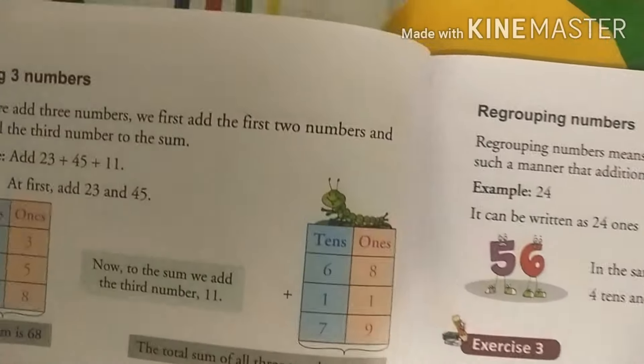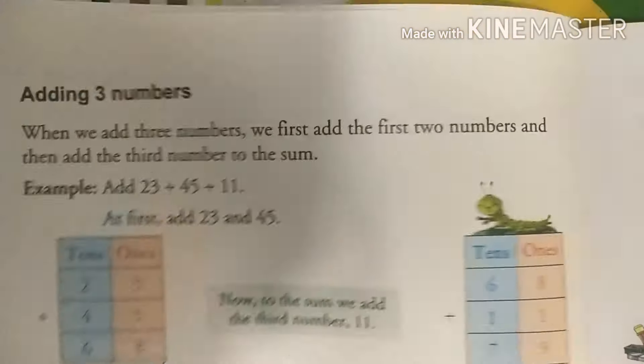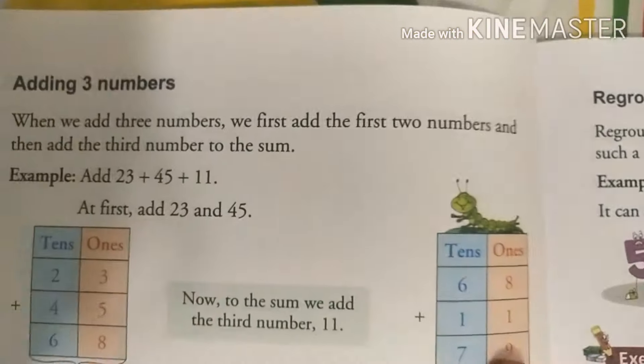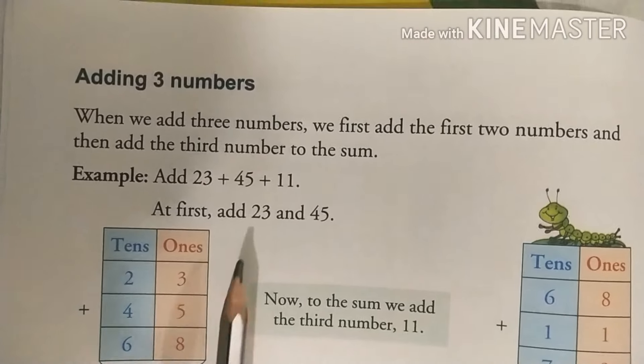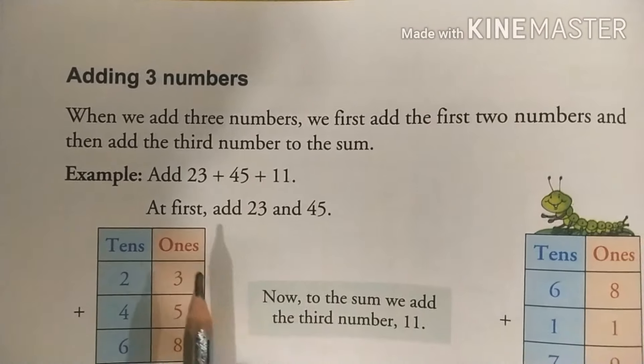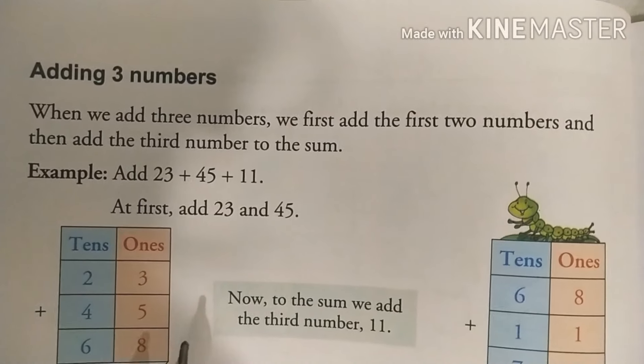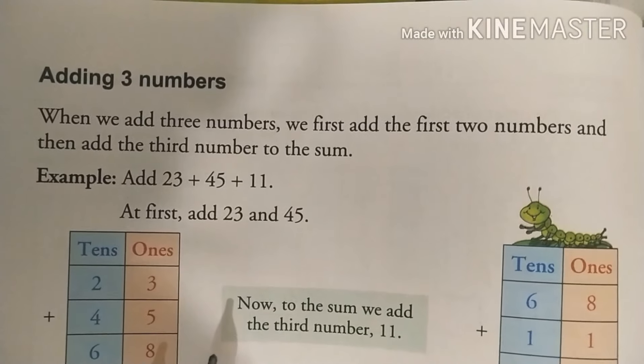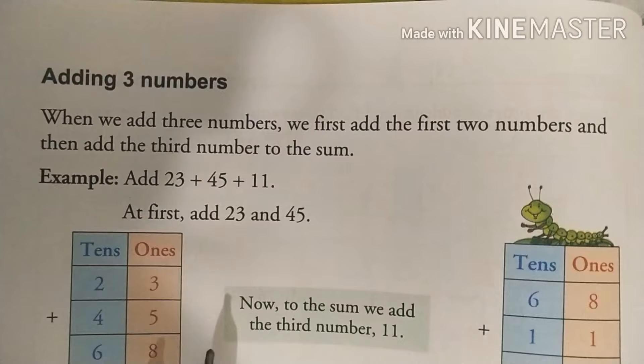Today's topic is adding 3 numbers. Aaj ham sikhenge 3 numbers kaise add karte hain. When we add 3 numbers, we first add the first 2 numbers and then add the 3rd number to the sum.